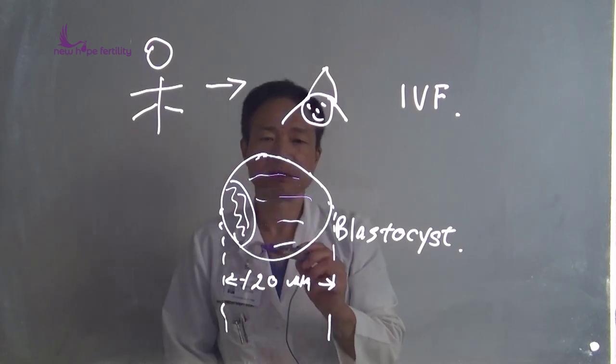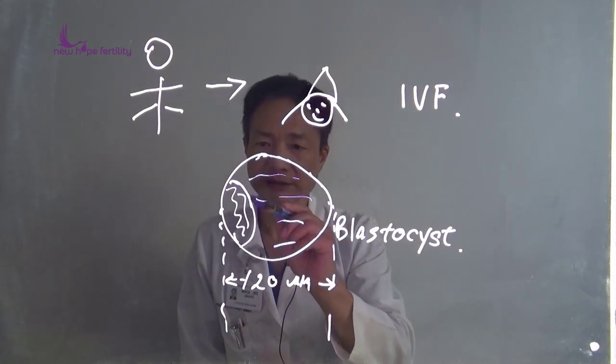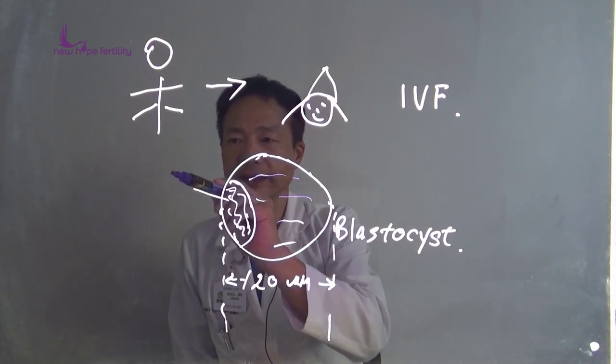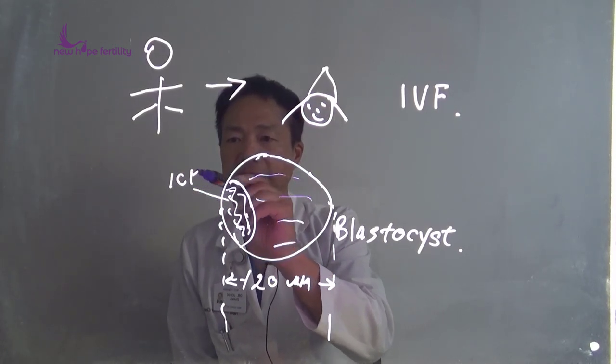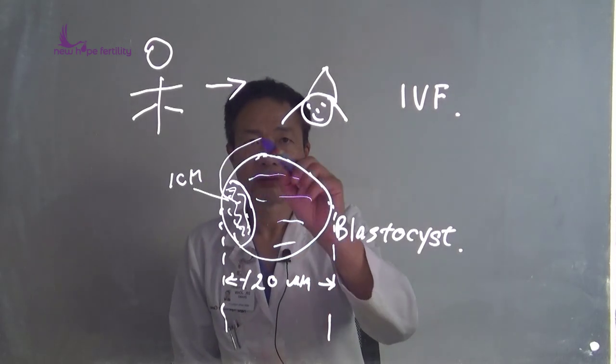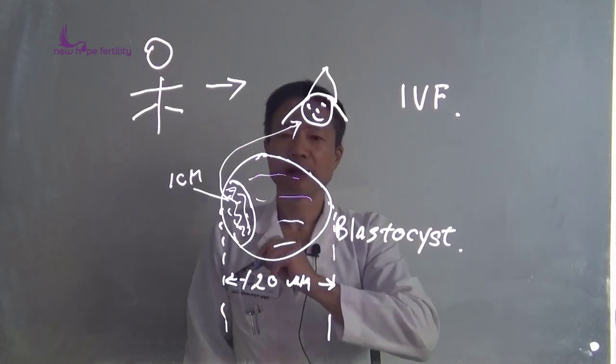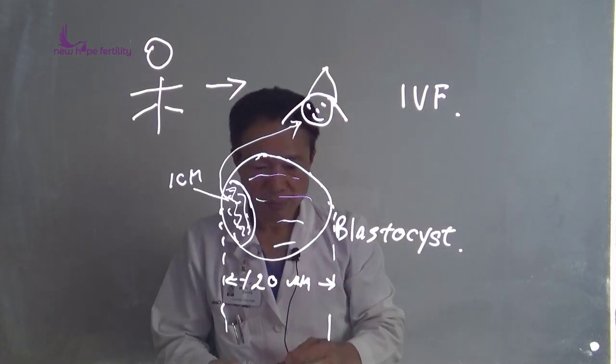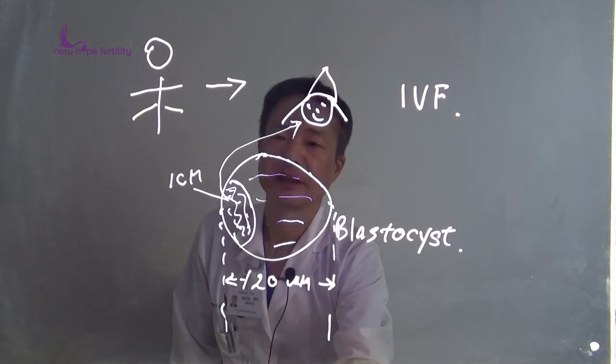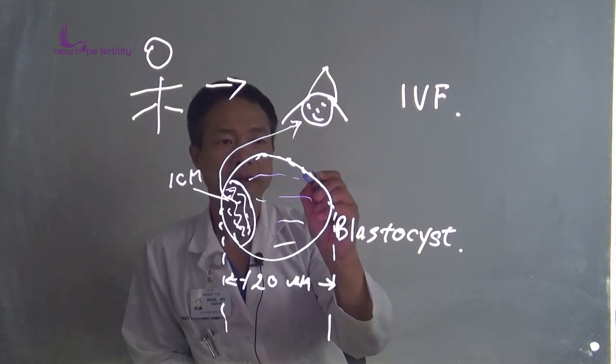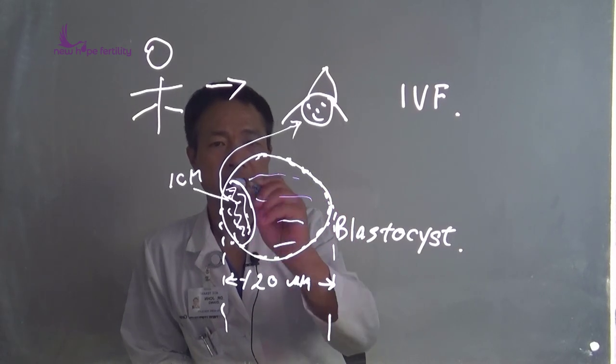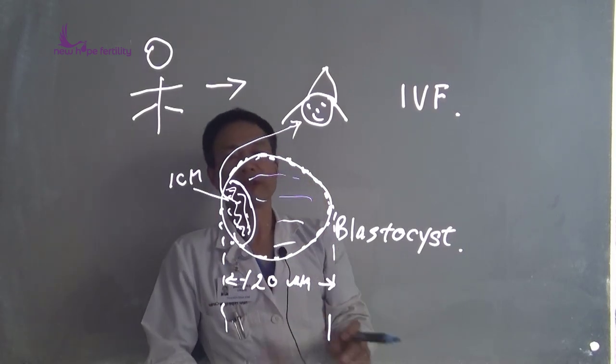And meanwhile, a nice, firm inner cell mass—this eventually will become baby—and surrounded by many trophectoderm cells. Then this embryo goes to make baby.